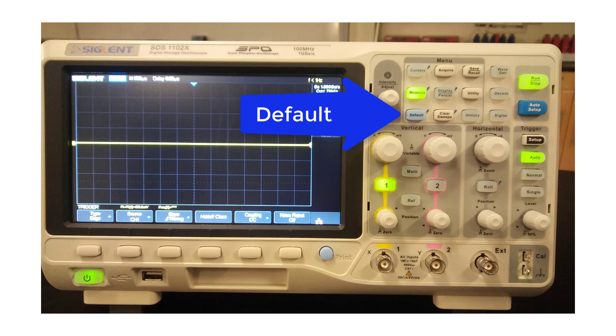When using a digital oscilloscope, it's a good idea to start by pushing the default button. The settings that were used last time are often left inside the oscilloscope and pushing the default button can save you some confusion later.